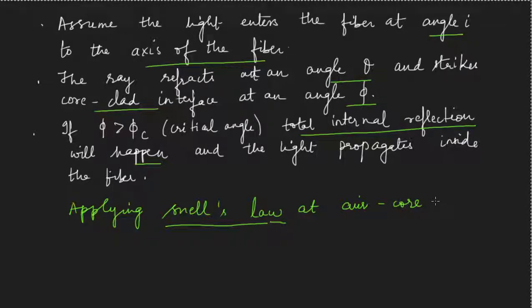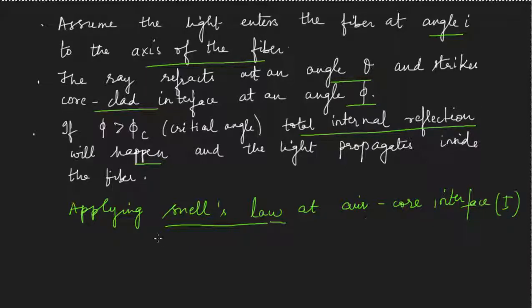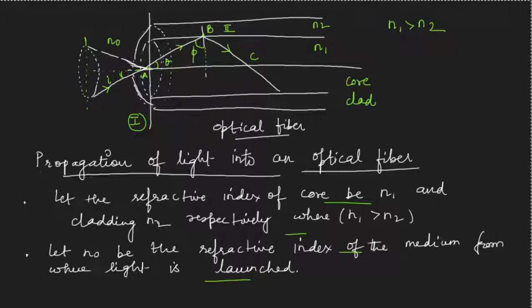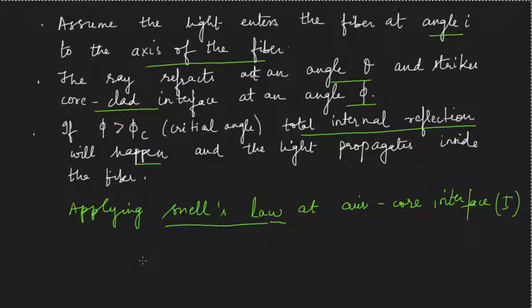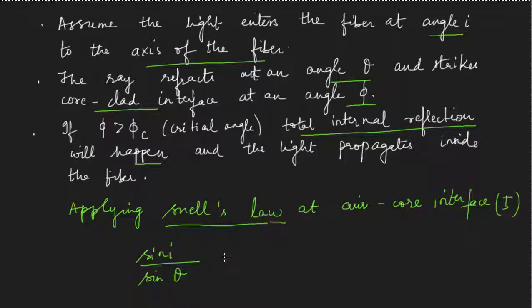Applying Snell's law at the air-core interface: sin(i) / sin(θ) = n1 / n0. This is my first equation.